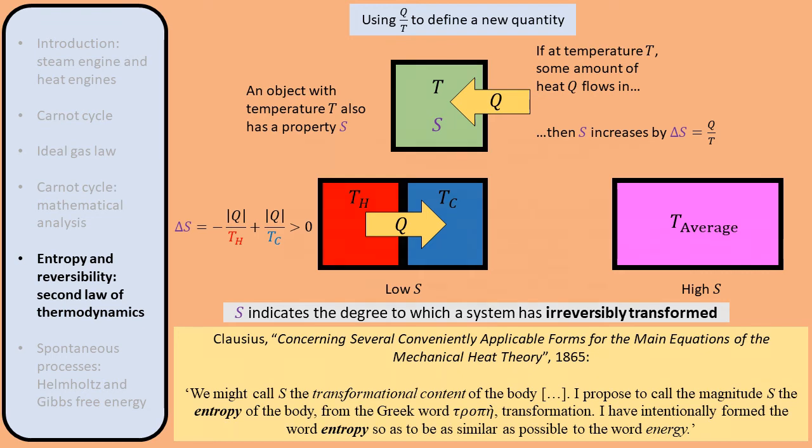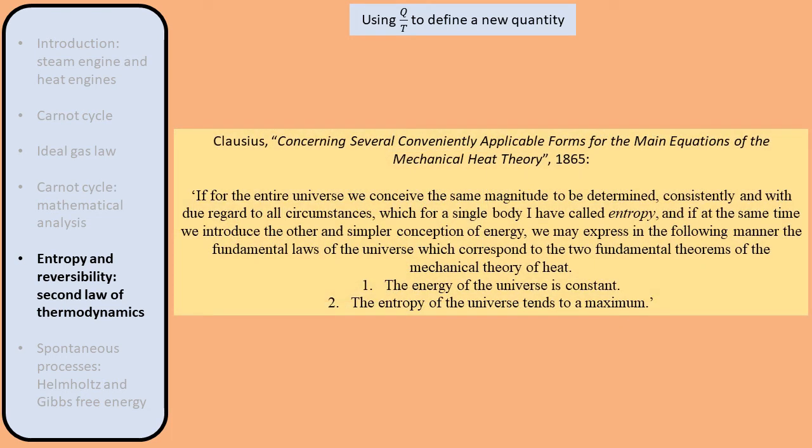We can conclude that S quantifies the degree to which a system has irreversibly transformed. Clausius in 1865 interpreted S as the transformational content of the body. He named S the entropy, after the Greek word for transformation and to make it sound similar to energy. Clausius concluded that if we calculated the entropy and energy of the entire universe, the total energy remains constant while the total entropy increases. These two laws are today known as the first and second laws of thermodynamics.